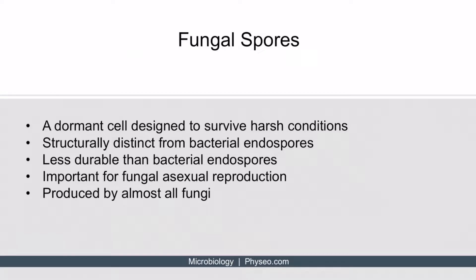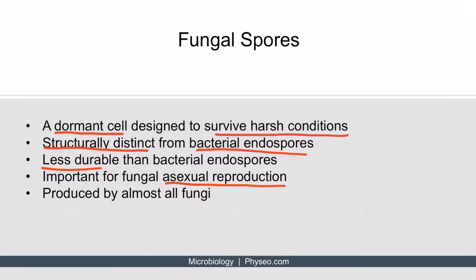Now let's discuss fungal spores. A spore is a dormant cell that's designed to survive harsh conditions. The main reason we're discussing this is because it can be confusing when you start thinking about bacteria — bacteria and fungi both produce spores. However, fungal spores are structurally distinct from bacterial endospores and are also less durable. Fungal spores are an important aspect of fungi because they allow these organisms to reproduce asexually. Also, while only a couple types of bacteria produce endospores, almost all fungi produce spores. The main takeaway is that fungal spores are distinct from bacterial endospores, so don't get them confused.